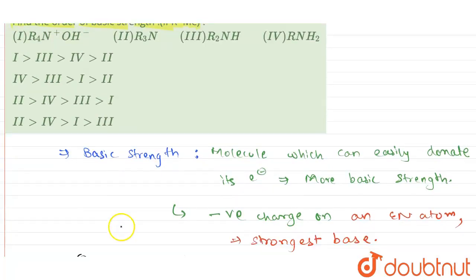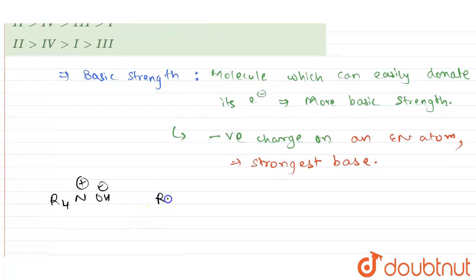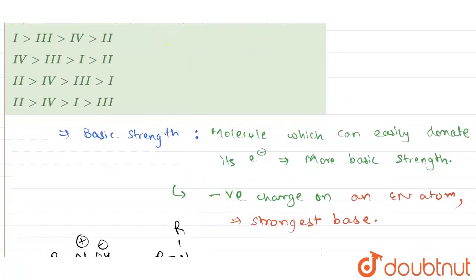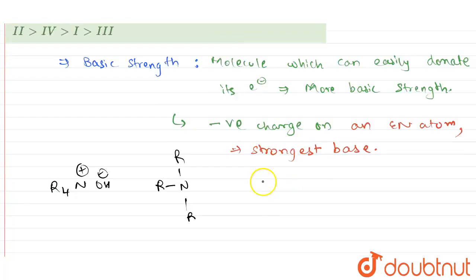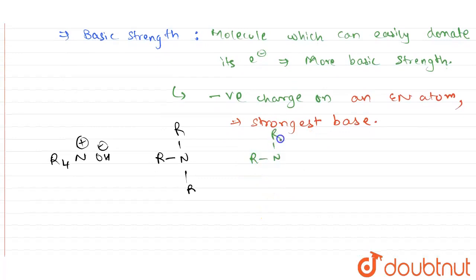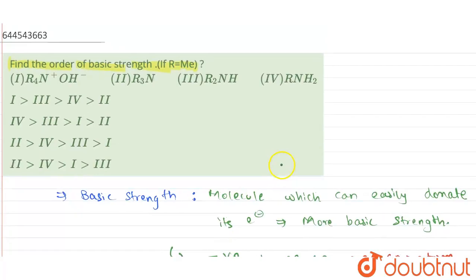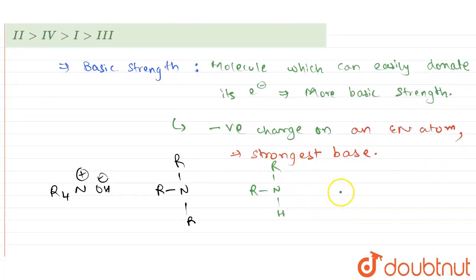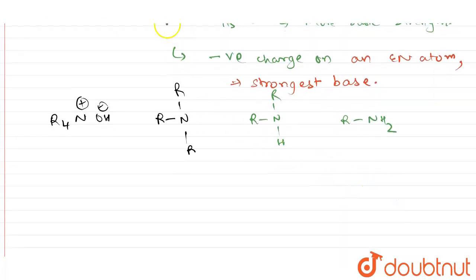Then we have R3N, means RNR, R like this, right? So this is R3N. Then what we have is R2NH, RNR, RH. And then we have RNH2.